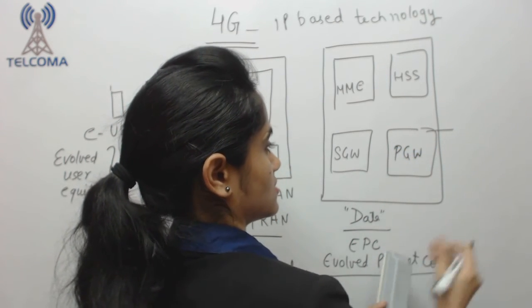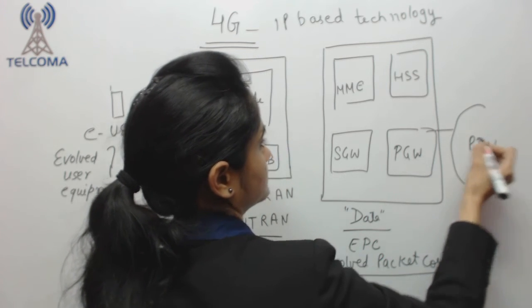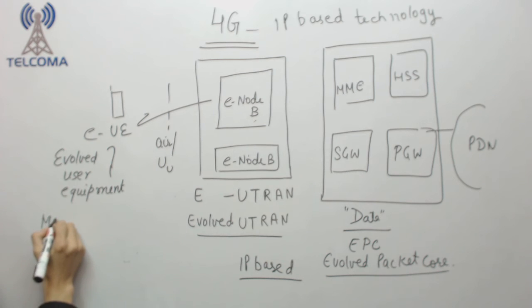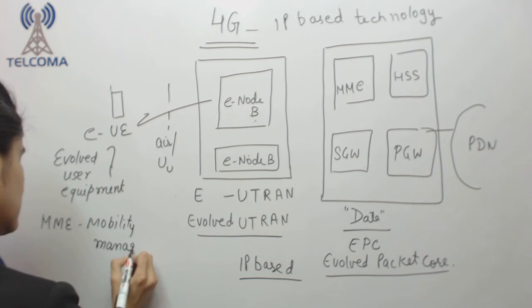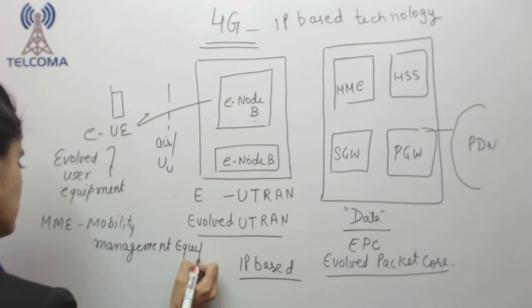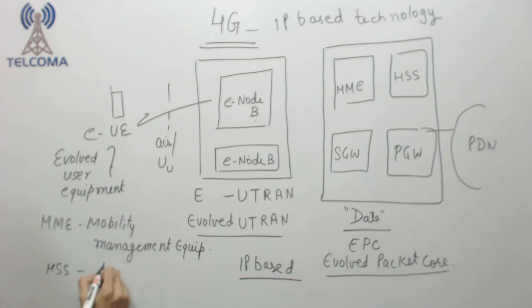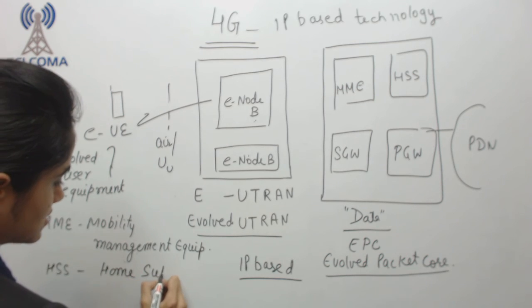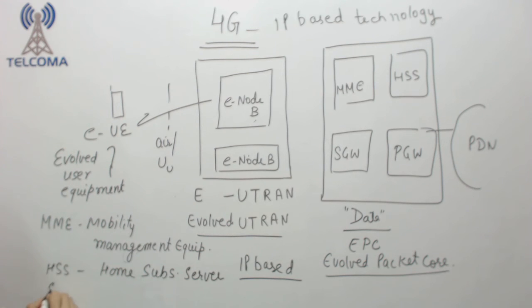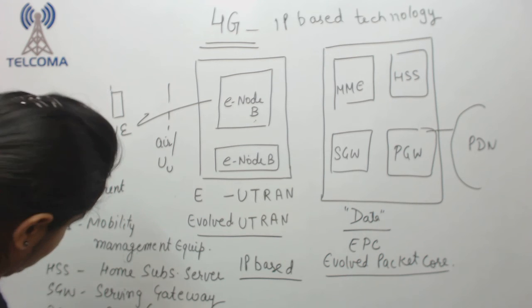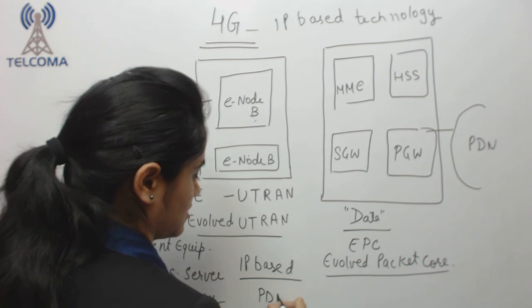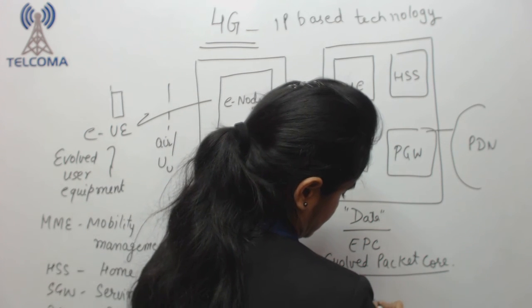Because this external network is public data network. MME, mobility management equipment. Then we have HSS, home subscriber server, SGW serving gateway, PGW as PDN gateway, and PDN as public data network.